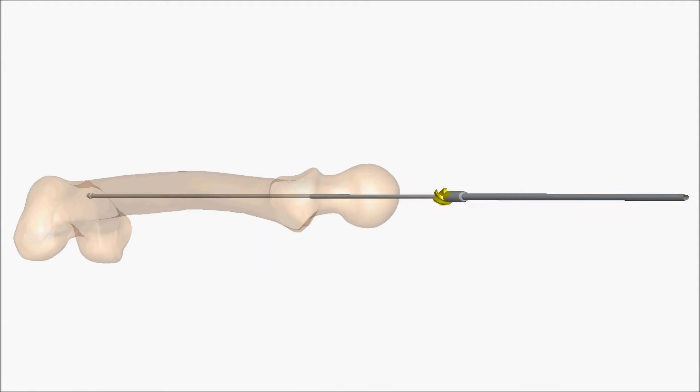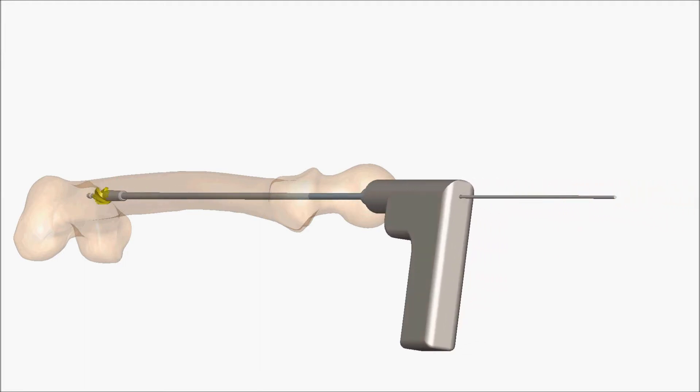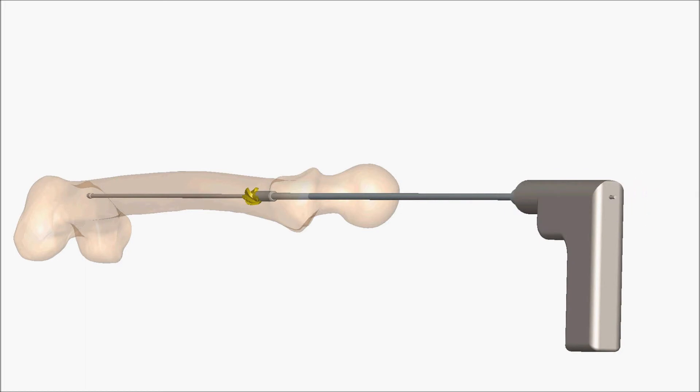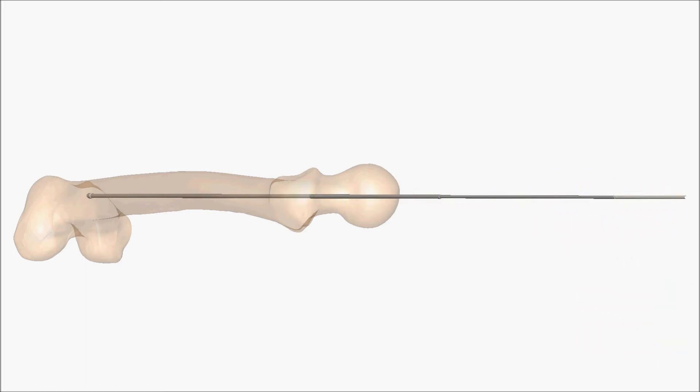If necessary, enlarge the IM canal through sequential reaming. It is recommended that the canal be reamed 1mm greater than the distal diameter of the nail, which is 11mm. Once reaming is complete, remove the outer sheath of the guide wire in preparation for nail insertion.